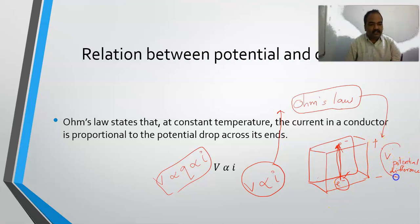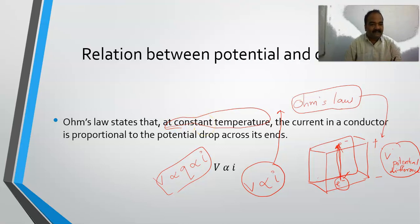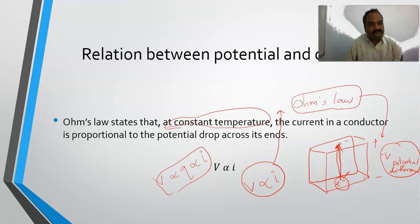So this potential difference is nothing but the amount of energy, and this energy is driving your electrons. In other words, it can be stated that at constant temperature, the current in the conductor — which means how much amount of charge you are able to move in this conductor — is dependent upon the potential drop across its ends. The higher the energy you have, the more charge you can move. The more charge is nothing but the current.